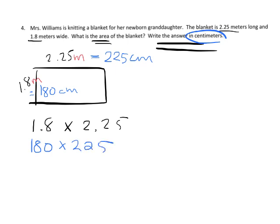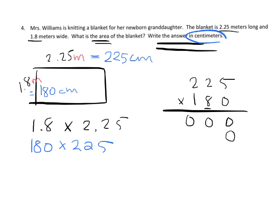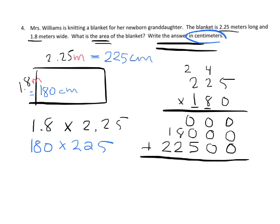Using the traditional standard algorithm for 180 times 225: multiplying by 0 gives us 000. Multiplying by the 8, which is really 80, put the 0: 8 times 5 is 40, 8 times 2 is 16 plus 4 is 20 (carry the 2), 8 times 2 is 16 plus 2 is 18. Multiplying by the 1, really 100, so it ends in two 0s: 1 times 5 is 5, 1 times 2 is 2, 1 times 2 is 2. Adding everything up: 0, 0, 5, then 8 and 2 is 10 (carry the 1), then 1, 1, and 2 gives 4. So that's 40,500 square centimeters.